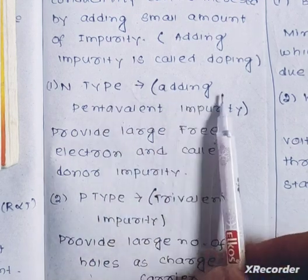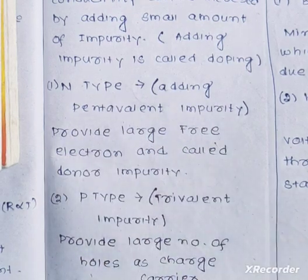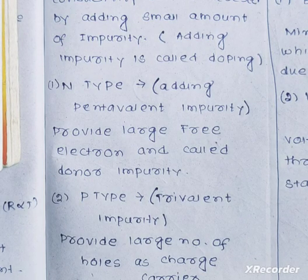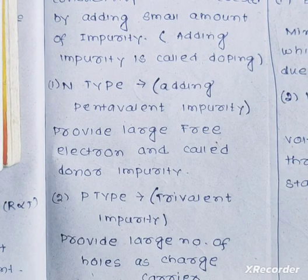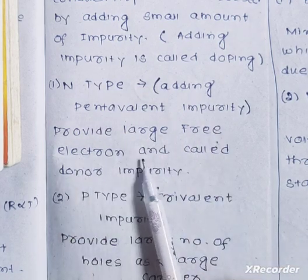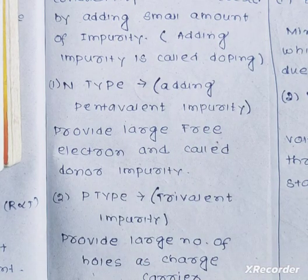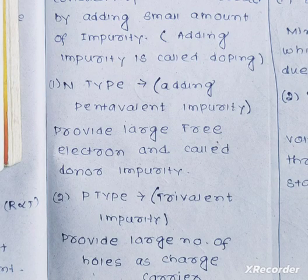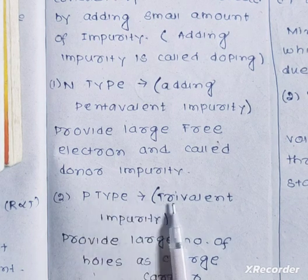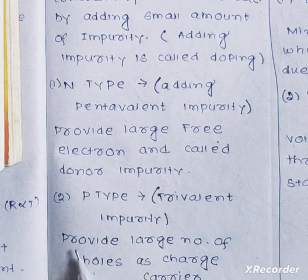If we add a small amount of impurities to the semiconductor, it becomes an extrinsic semiconductor. When pentavalent impurities are added, the material provides a large number of free electrons — this is called donor impurity — and the result is an N-type semiconductor. For P-type, trivalent impurities are added, which provide a large number of holes as charge carriers.